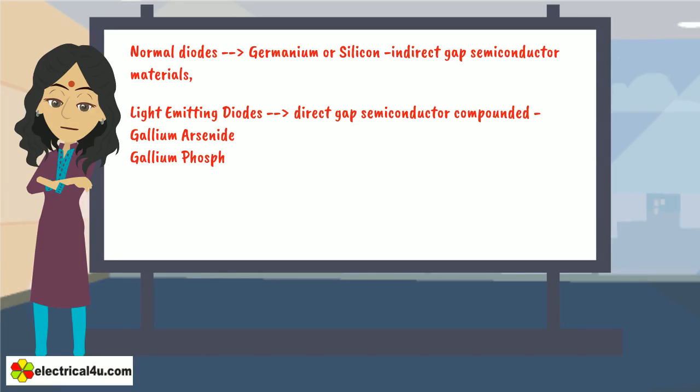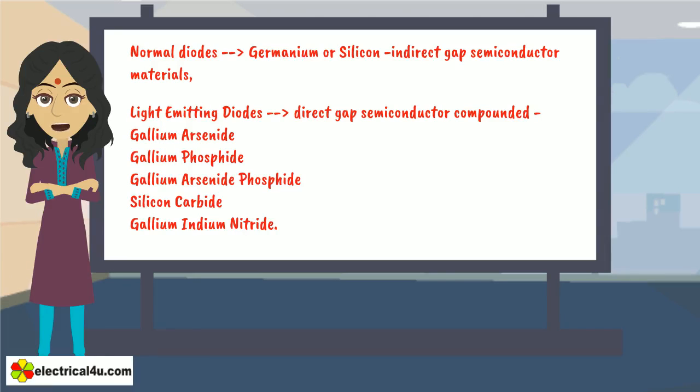gallium phosphide, gallium arsenide phosphide, silicon carbide, gallium indium nitride. Also, they may be mixed together at different ratios to produce more distinct wavelengths of colors.